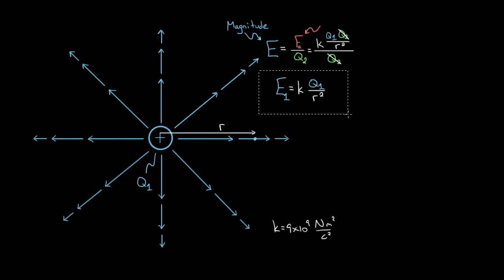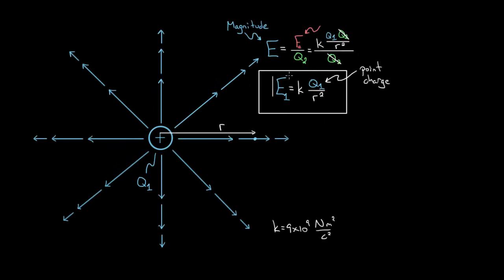This is a formula for the electric field created by a charge Q1. Technically, this is only true if it's a point charge — really small compared to the other dimensions in the problem — or if the charge distribution is spherically symmetric. If you're outside a spherically symmetric charge distribution with charge evenly distributed, this formula works just as well. The magnitude of the electric field at a point in space equals K times the charge creating the field, divided by R squared.